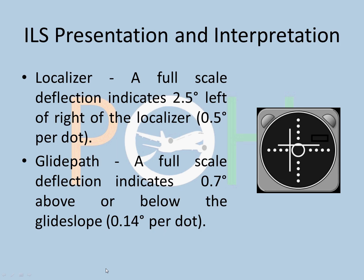ILS presentation and interpretation. A localizer full scale deflection indicates 2.5 degrees left or right of the localizer. Basically, if this vertical bar is fully to the left, it means 2.5 degrees left or right of the localizer. It also means 0.5 degrees per dot. Each dot is 0.5 degrees: 0.5, 1, 1.5, 2, basically starts from middle, so it becomes 2.5 completely.